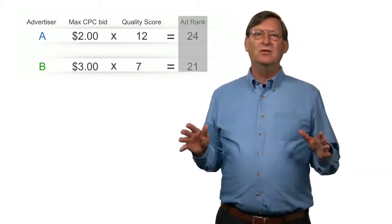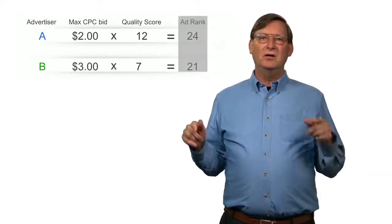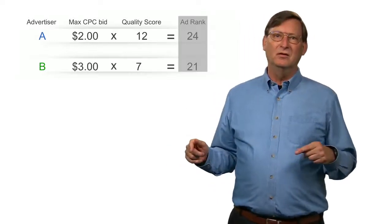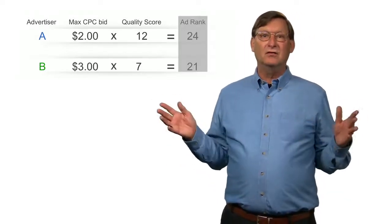Now in this example, notice that even though advertiser A's bid is lower than advertiser B's, his ad rank is higher because of his higher quality score.